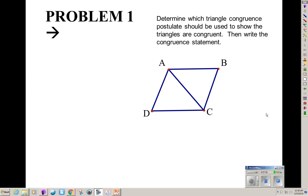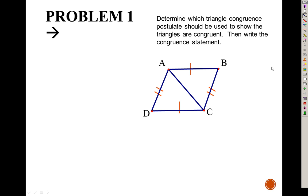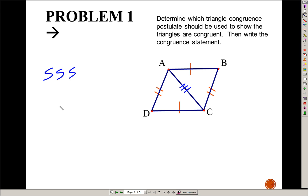Let's determine if the triangles are congruent and which postulate we can use. In this example, we're given two triangles with two pairs of congruent sides, and that's all we know. Look for vertical angles or shared sides or shared angles. I don't have any vertical angles, but these do share a side, so I can mark that. Now I have Side-Side-Side — one pair of sides, two pairs of sides, and the third pair they share in the middle. So they are congruent because of SSS.